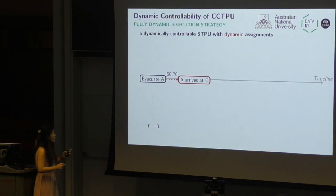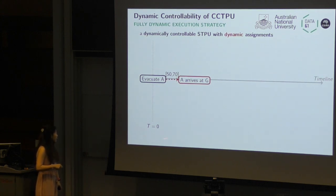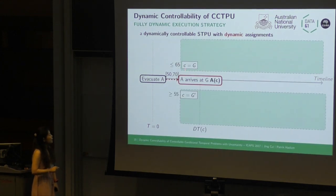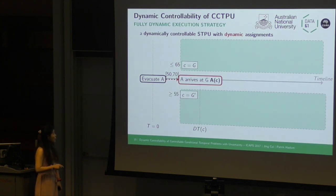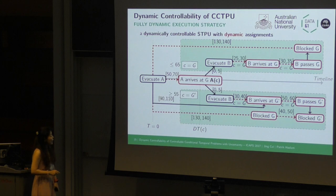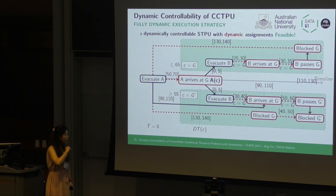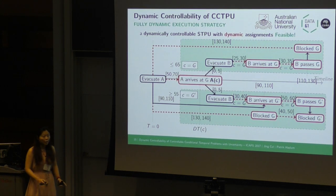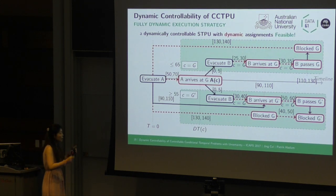This is the fully dynamic execution strategy example. Instead of making the decision at the beginning, we can make the decision after observing these contingent links. If the duration is smaller than 65, we evacuate B through G; otherwise, we evacuate B through G prime. Then we get two sub-networks sharing the same prehistory, and all constraints are satisfied. This means if we make the decision dynamically, we can get a feasible schedule.